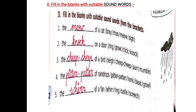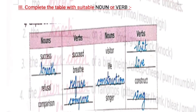Second one, fill in the blanks with suitable sound words. First, the dash of a cat — the mew of a cat. Second, the dash on a door — the knock on a door. Third, the dash of a bird — the chip-chip of a bird. Fourth, the dash of raindrops — pitter-patter of raindrops. And last one, the dash of a fan — the whirr of a fan.